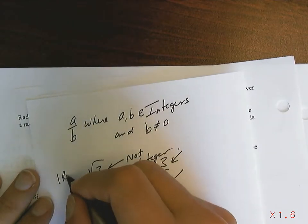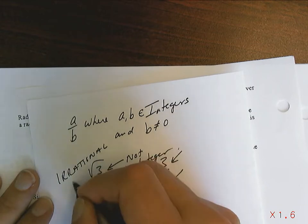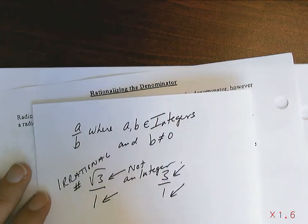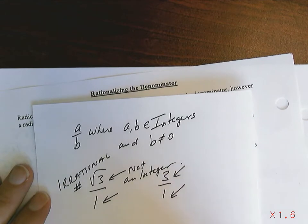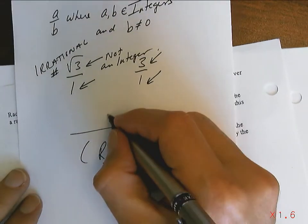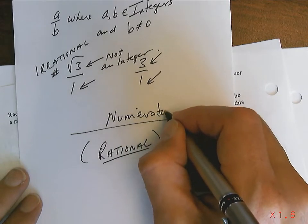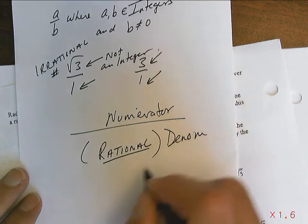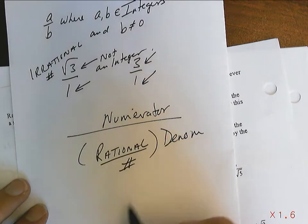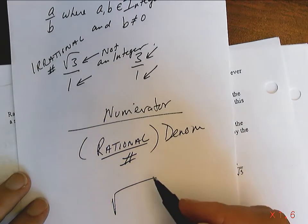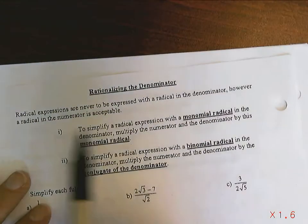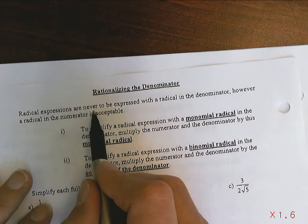So those are in fact called irrational numbers. If I'm going to rationalize the denominator, what that means is I'm going to make sure that whatever is in the denominator is rational. Whatever is in the denominator — I have to make sure it is a rational number, which means it can't be a square root, or a cubed root, or a fourth root, or any type of root that is not a perfect square.